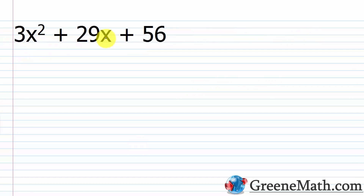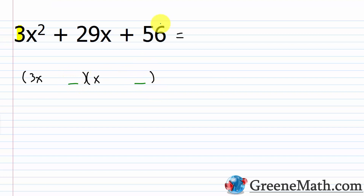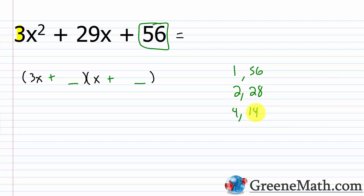Let's look at another one: 3x² + 29x + 56. Again we have a prime number as the leading coefficient, so 3x² can only come from 3x times x. I set that up and now just need the last terms, which are both positive since everything is positive. For 56, the factors are: 1 and 56, 2 and 28, 4 and 14, and 7 and 8. With 1 and 56, 3 times 56 is 168 — way too large, so that won't work.